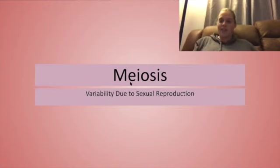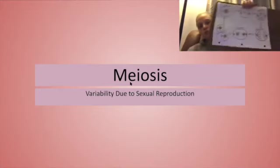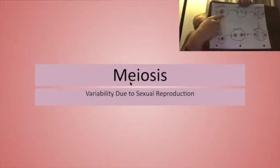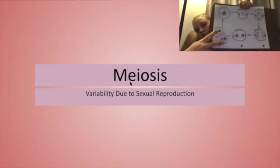Hello and welcome back. Today we're going to talk about meiosis. We've been talking about mitosis, which is a form of asexual reproduction in eukaryotes where one cell is going to copy its DNA and split to give us two cells.